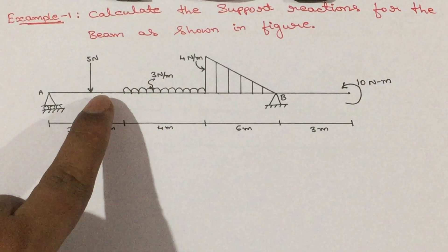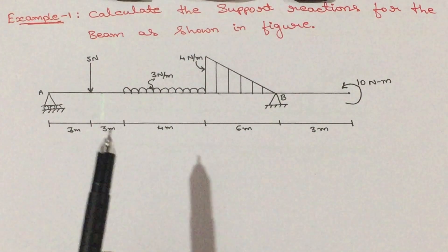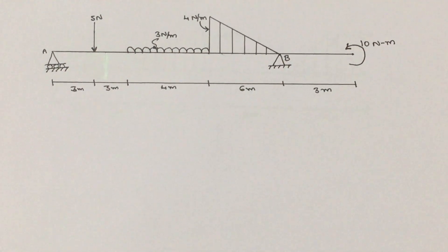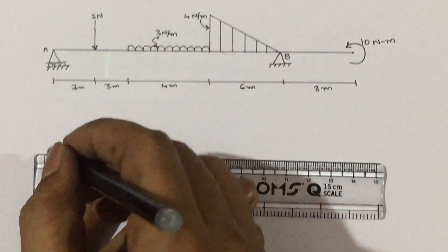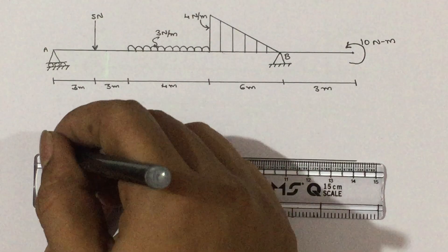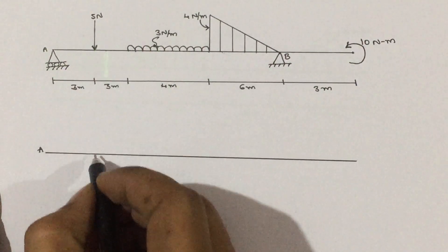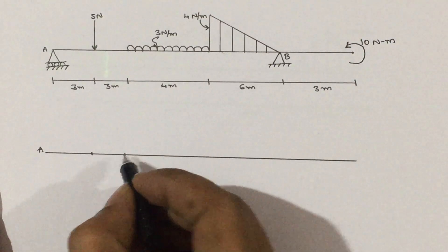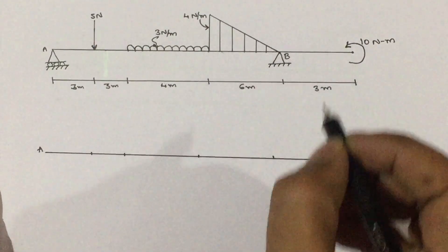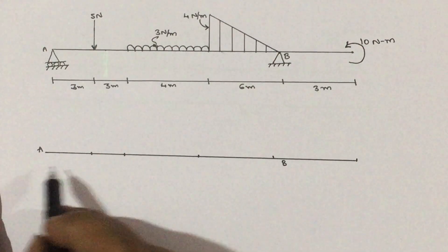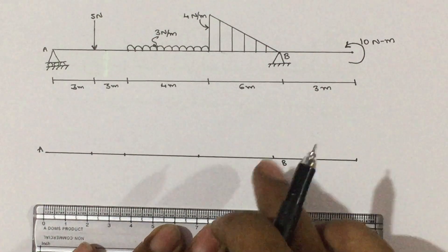Please remember, it is very important. First write the line, then mark the points at the load acting points and at the load starting and ending points. Just mark the points — here we have the B point. Then line, points, and distances.